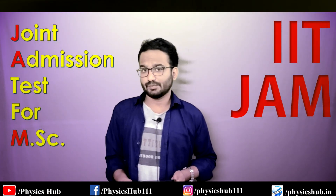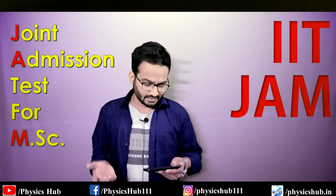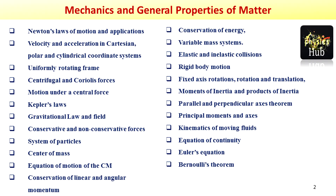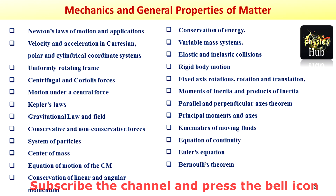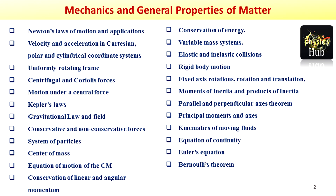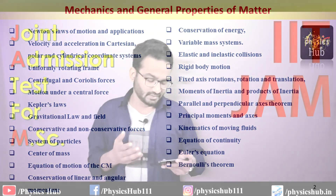The second section is Mechanics and General Properties of Matter. Topics include: Newton's laws of motion, velocity and acceleration in Cartesian, polar, and cylindrical coordinate systems, uniformly rotating frames, centrifugal and Coriolis forces, motion under central force, Kepler's laws, gravitational law and field, conservative and non-conservative forces, system of particles, center of mass, conservation of linear and angular momentum, conservation of energy, variable mass systems, elastic and inelastic collisions, rigid body motion, fixed axis rotation, moment of inertia, parallel and perpendicular axis theorems, kinematics of moving fluids, equation of continuity, Euler equation, and Bernoulli's theorem.